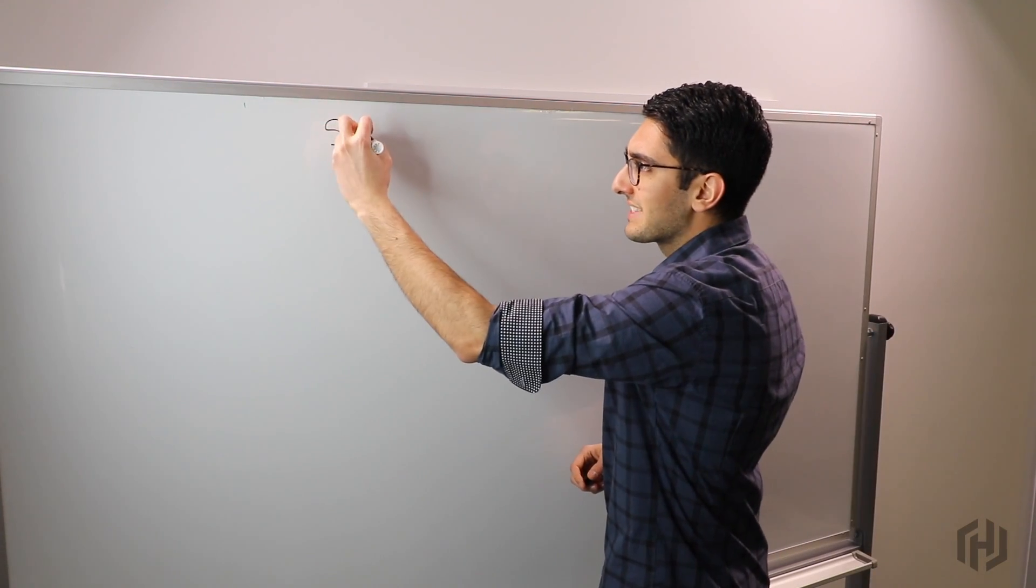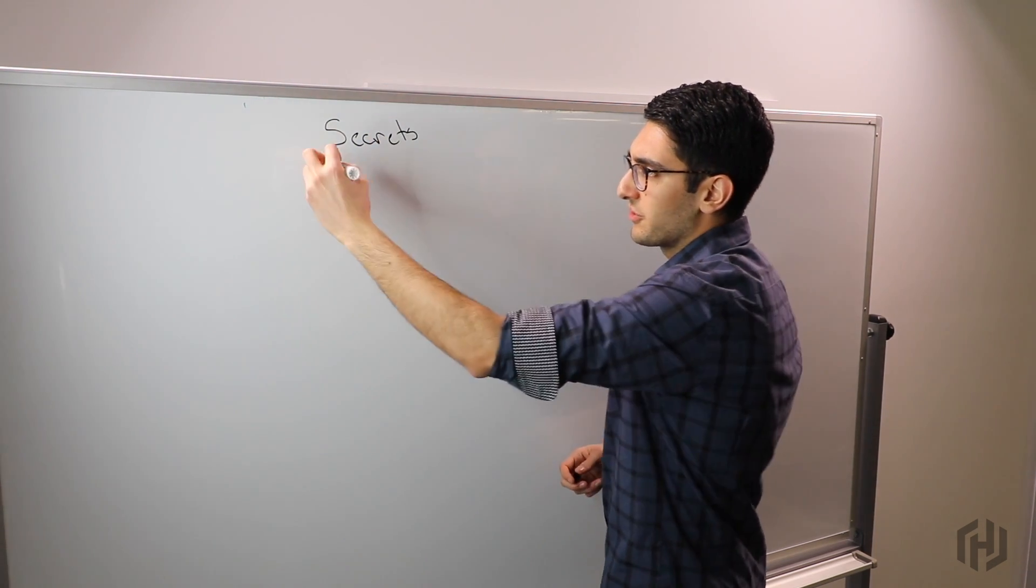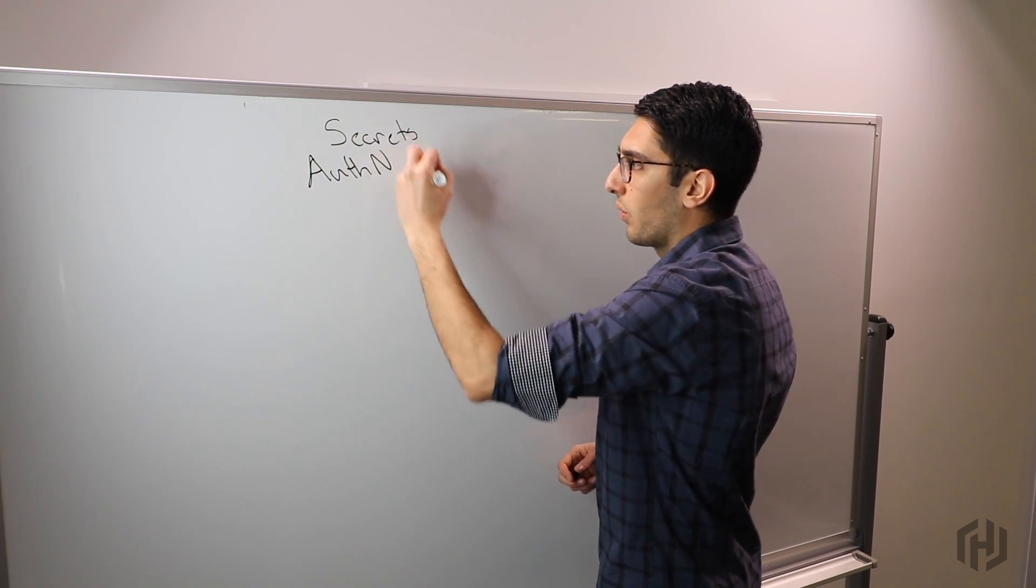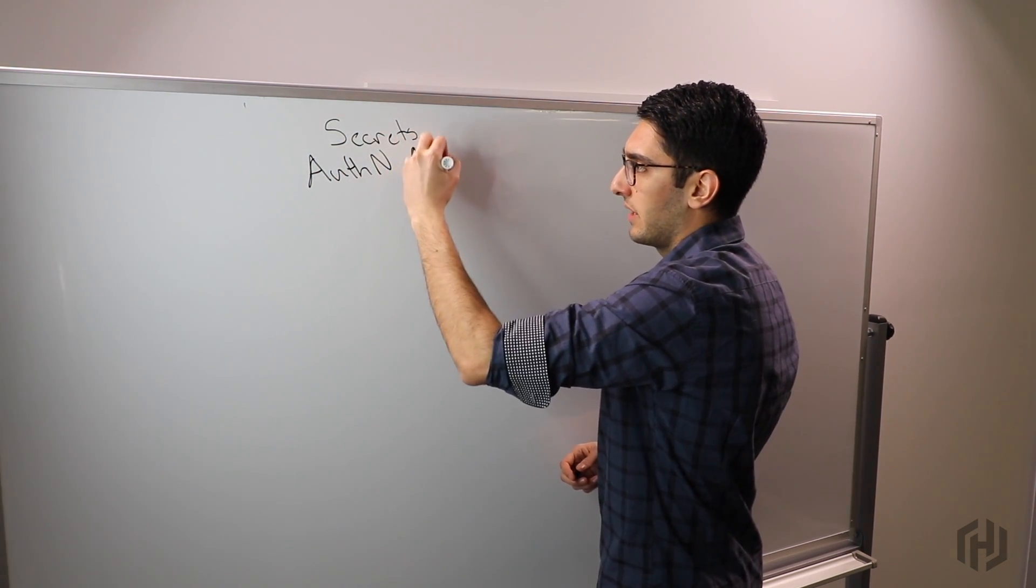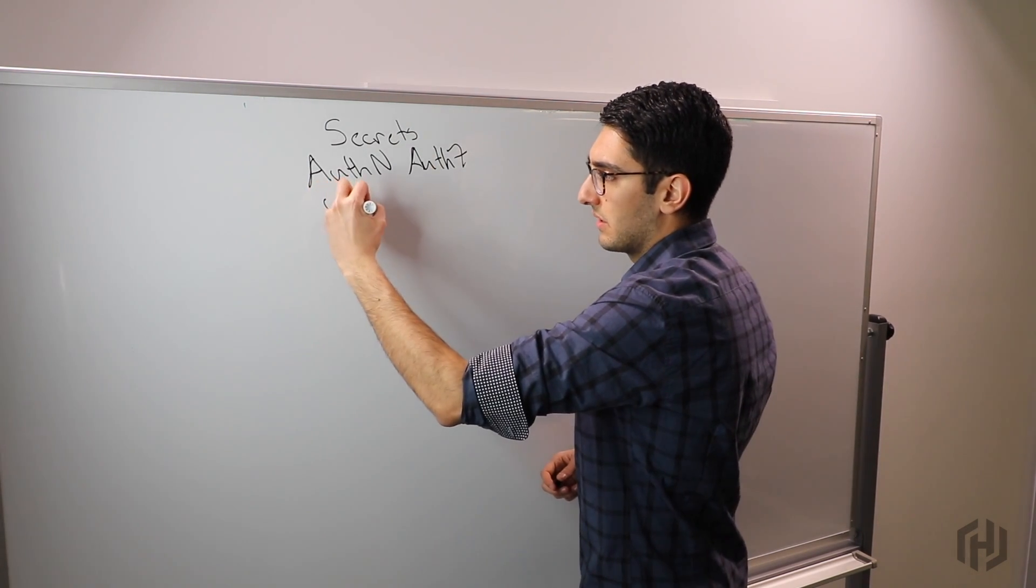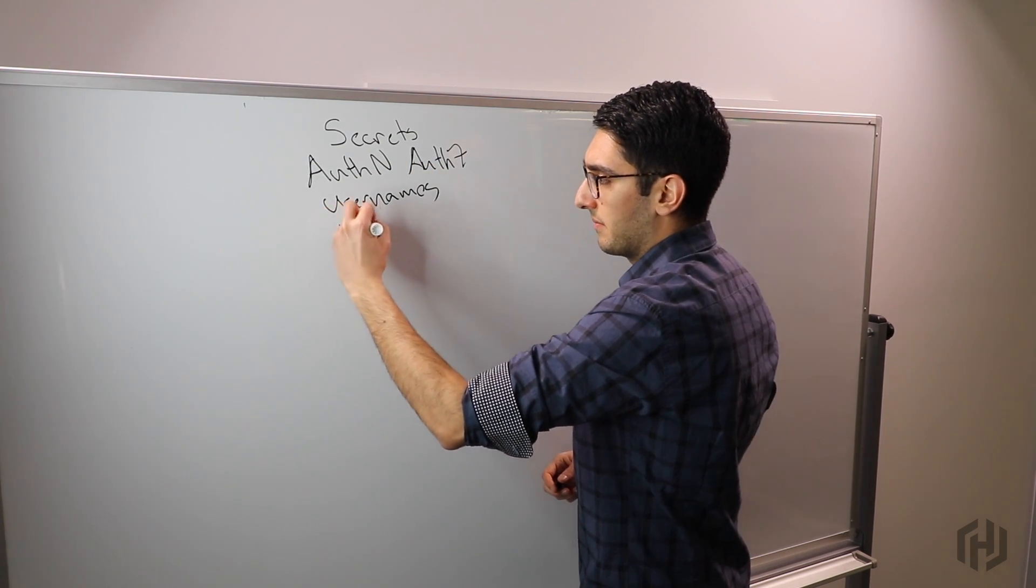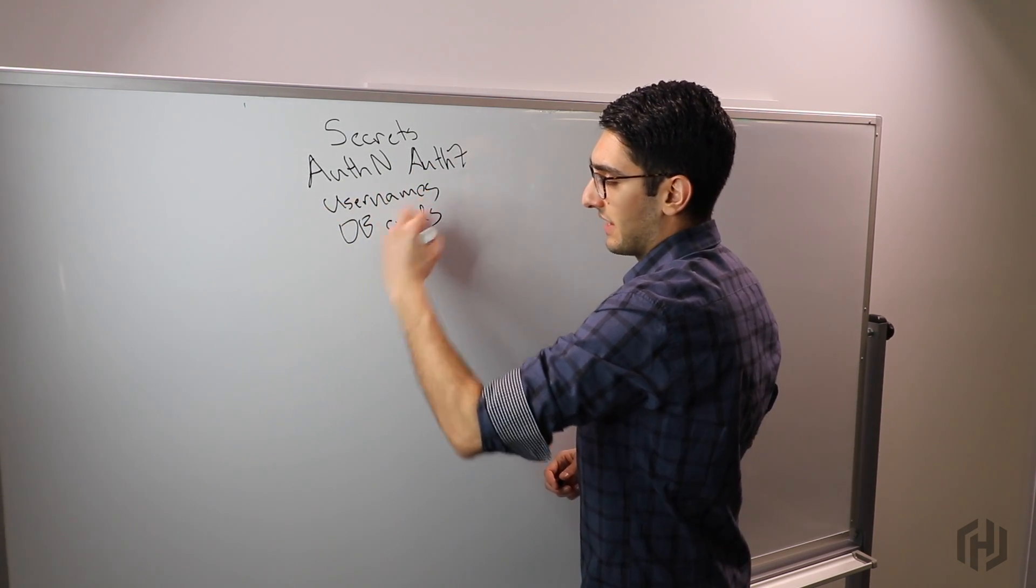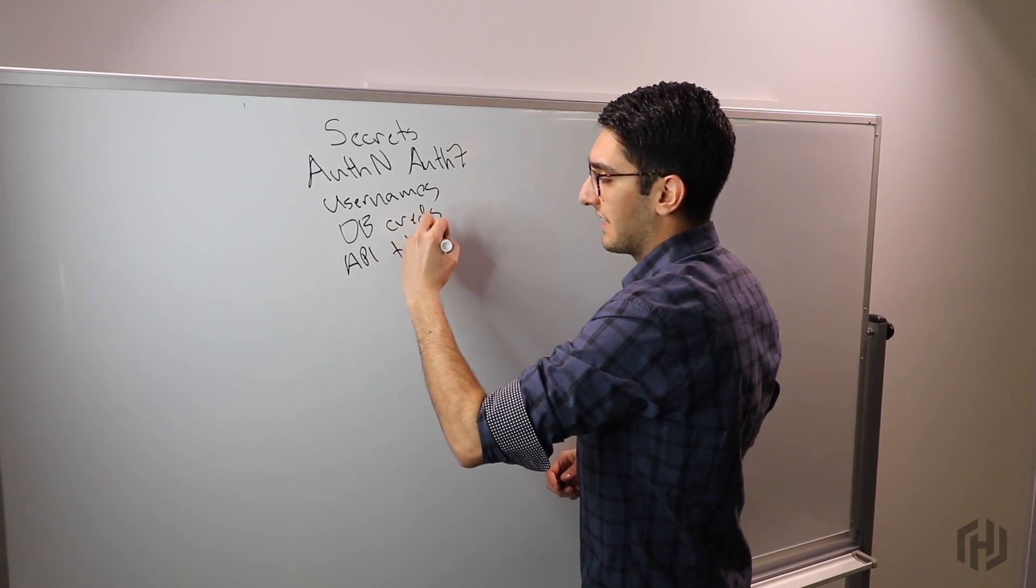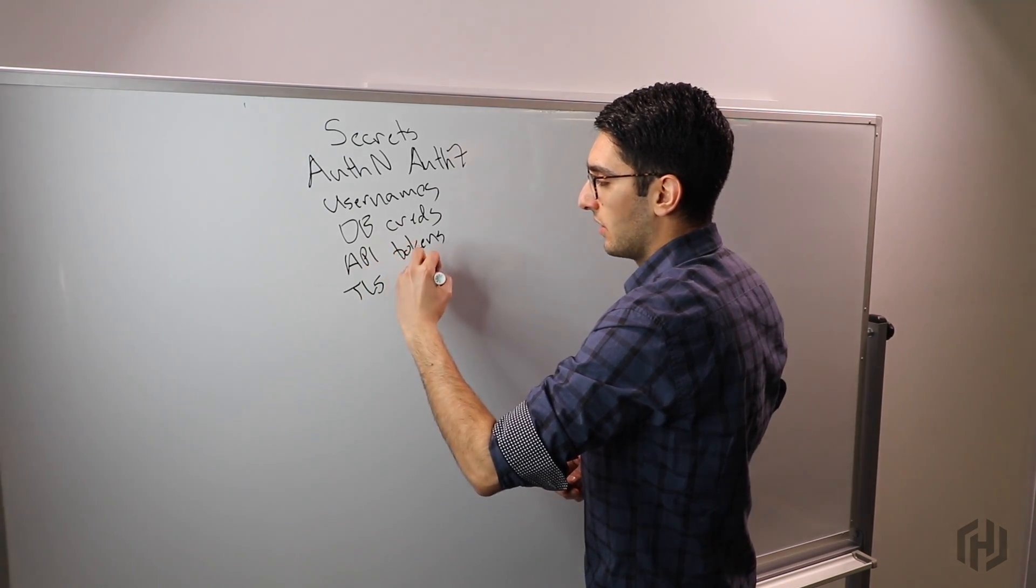When we talk about secret management, we're really talking about managing a set of different credentials. What we mean by these credentials is anything that might grant you authentication to a system or authorization to a system. Some examples might be usernames and passwords, database credentials, API tokens, or TLS certificates.